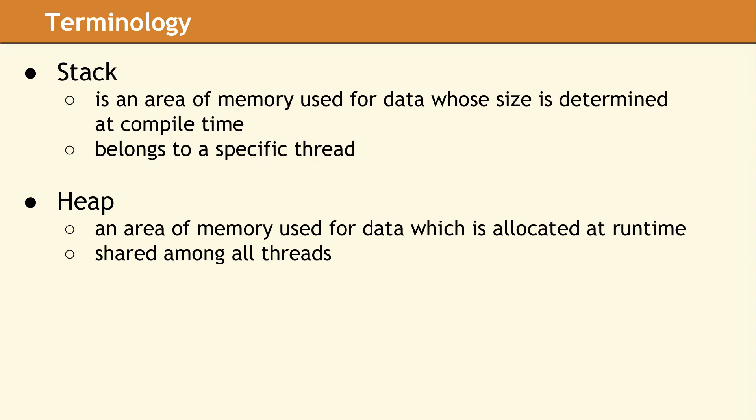As we've mentioned, the stack belongs to a specific thread, and this is the area of memory used for local variables and other data which is known at compile time. The heap, which is used by runtime-allocated data, is shared among all threads.